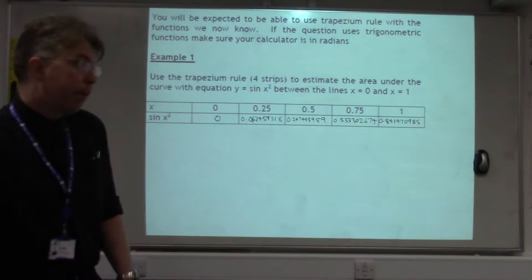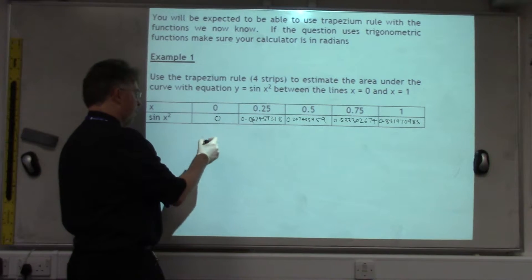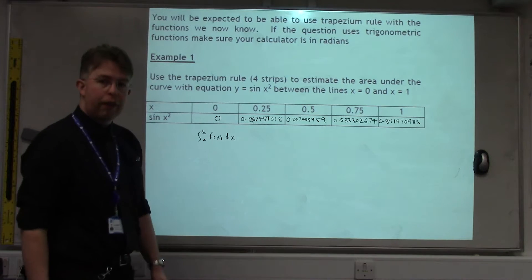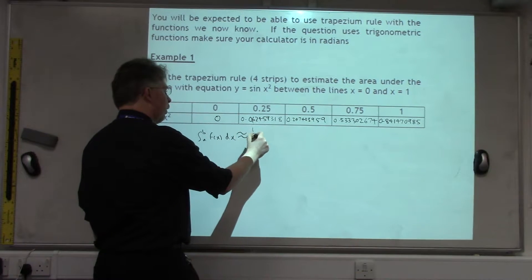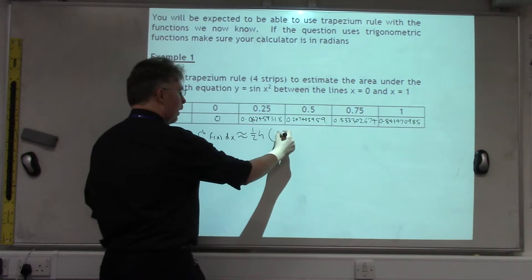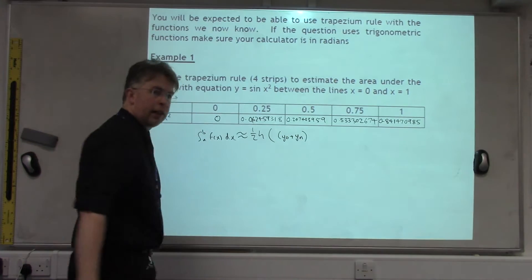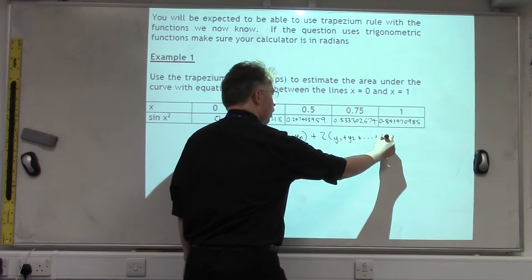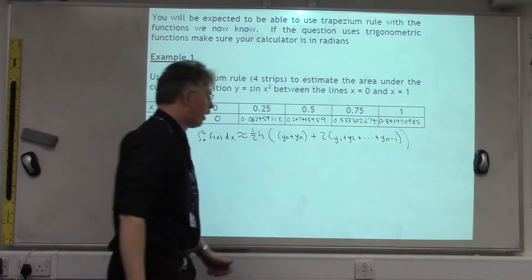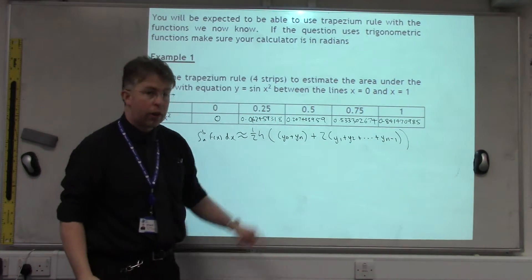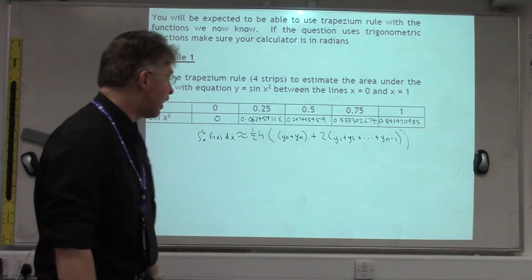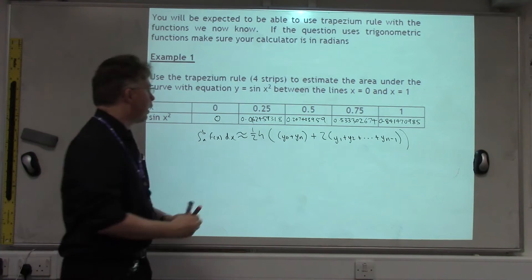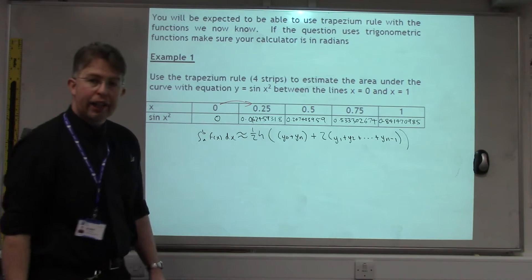The Trapezium Rule is in the formula booklet. The integral of f(x) between a and b is approximately equal to half h times, open bracket, y0 plus yn plus 2 times y1 plus y2 plus yn minus 1. Technically, the bracket between the y0 and yn isn't necessary, but it is like that in the formula booklet.